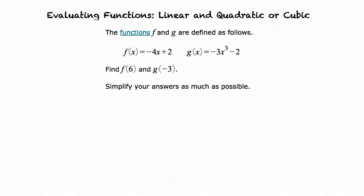Yes, we can begin first by substituting the 6 in for x in our first equation. Then we can multiply negative 4 and 6 to result in negative 24, and after adding 2 the total we result in is negative 22.